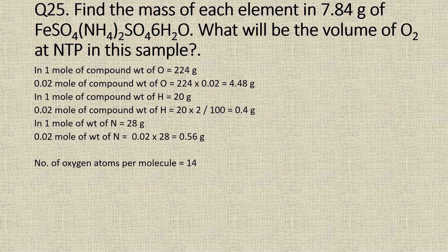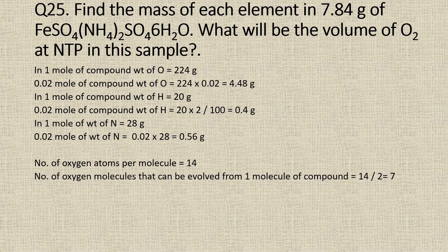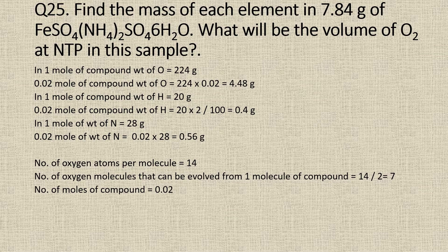The number of moles of oxygen atoms is 14. Now, we know that each oxygen molecule is made up of 2 atoms of oxygen, and here the number of oxygen atoms present is 14. So the number of oxygen molecules which will be formed from one molecule of the compound will be 14 divided by 2, which is equal to 7. So the number of moles of oxygen that will be evolved from one mole of the compound will be 7 moles of oxygen.